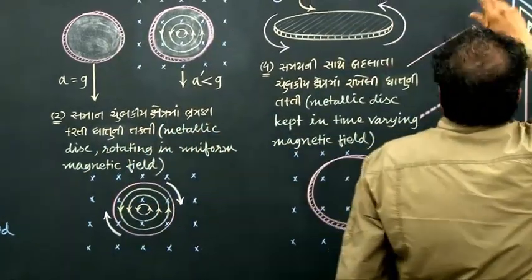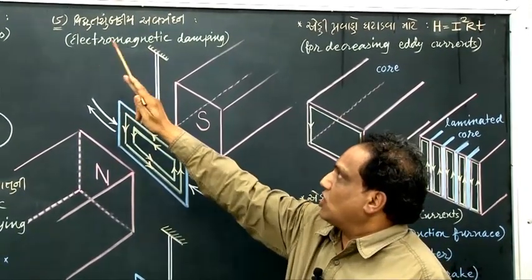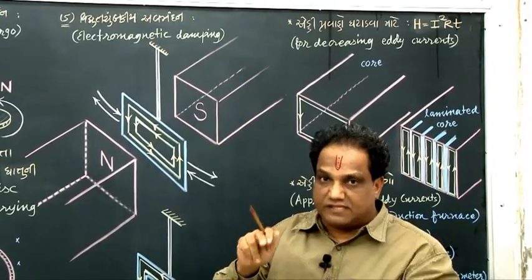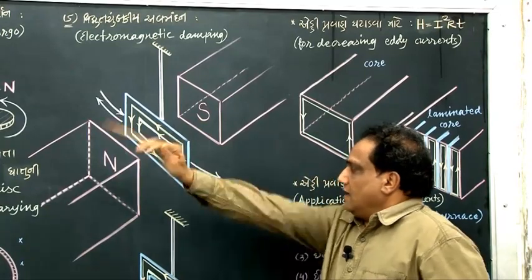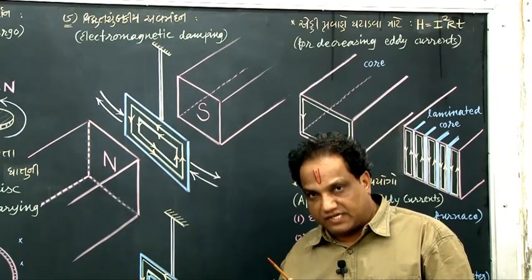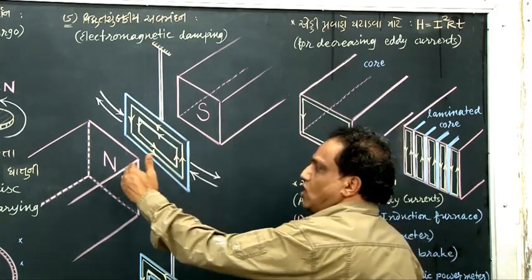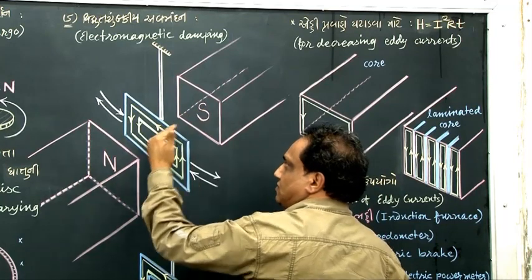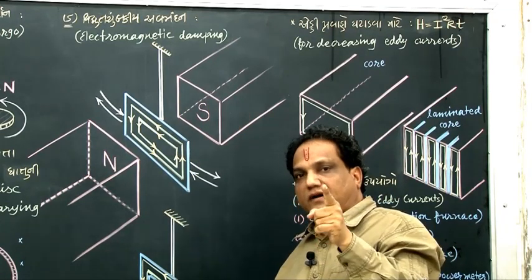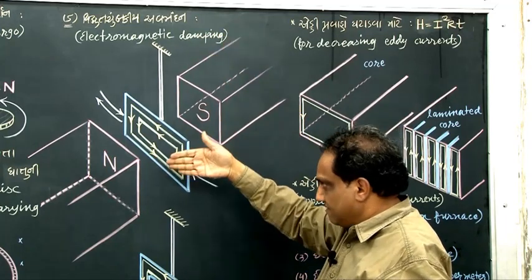Let us consider another example of eddy current production — the phenomenon called electromagnetic damping. Damping means decreasing. We have two magnetic poles of a strong permanent magnet — north pole and south pole. The direction of magnetic field between the poles is from north to south. In this externally applied magnetic field, we have suspended one metallic plane disc. It is suspended in a vertical plane.